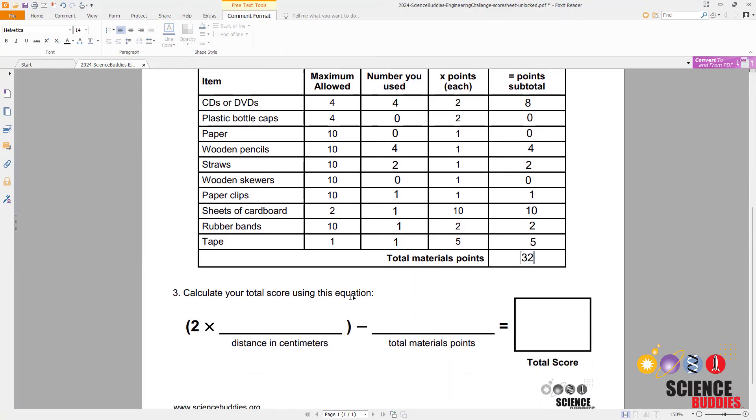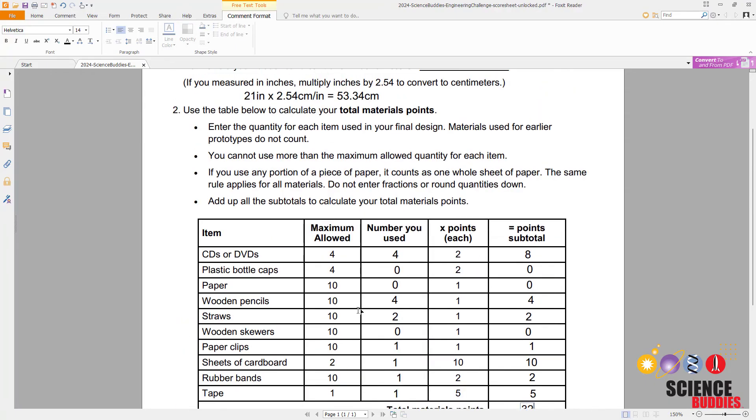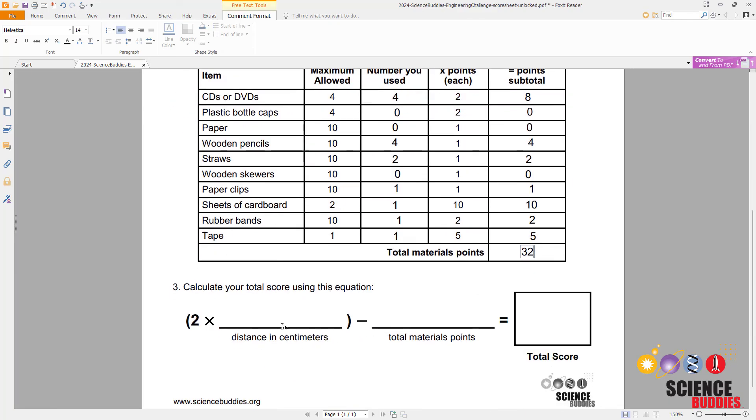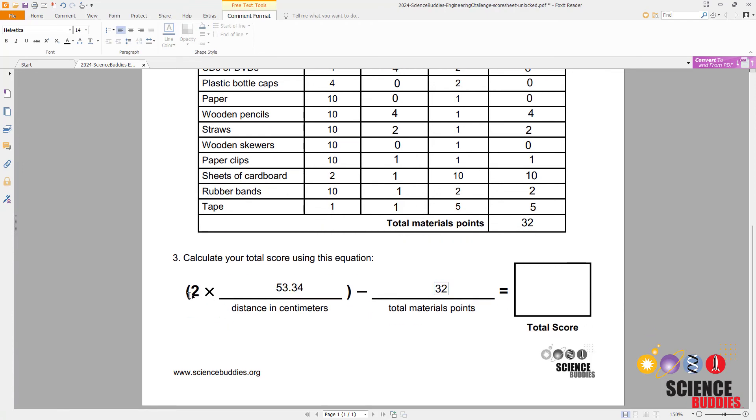You are then ready to plug numbers into the final score equation. So I'm going to take my distance in centimeters - not inches - which remember is 53.34, plug that in, take my materials points, plug that in, and then solve this equation. But remember that you need to follow order of operations and multiply two by the 53.34 before you subtract off the materials points. So I will write that out separately. Two times 53.34 is 106.68. Subtracting off the 32 then gives a final answer of 74.68 for my score.